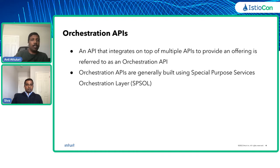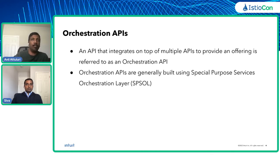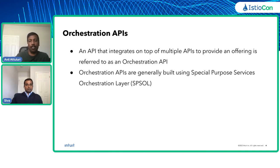Setting up the context for today — orchestration APIs. What are orchestration APIs? These are APIs that integrate multiple other APIs to provide a simplified interface for end users or end user applications. Traditionally, these orchestration APIs are built using something called a special purpose services orchestration layer — a new layer built on top of all your APIs where you start writing orchestration logic. For example, we have a payments API and a wallet API, and instead of the banking application calling both directly, we introduce a front-end API that becomes the orchestration layer.